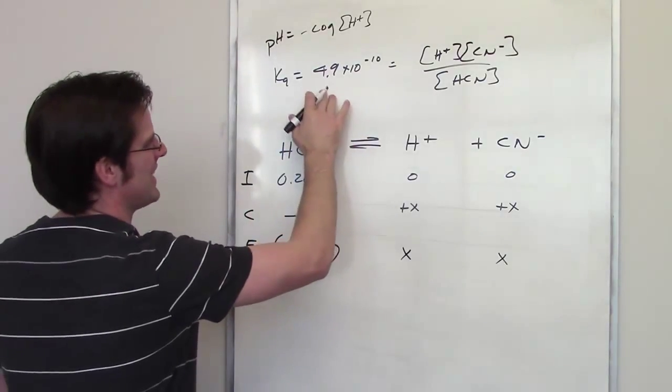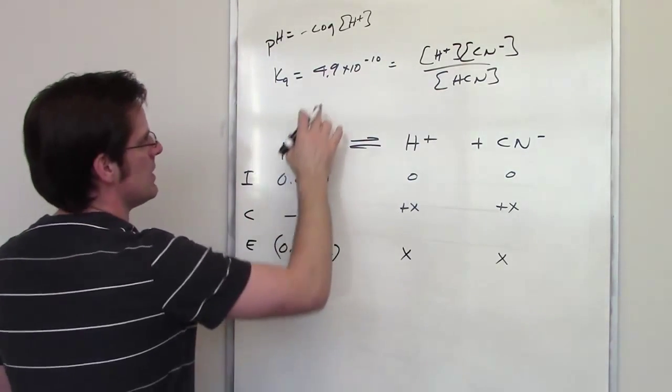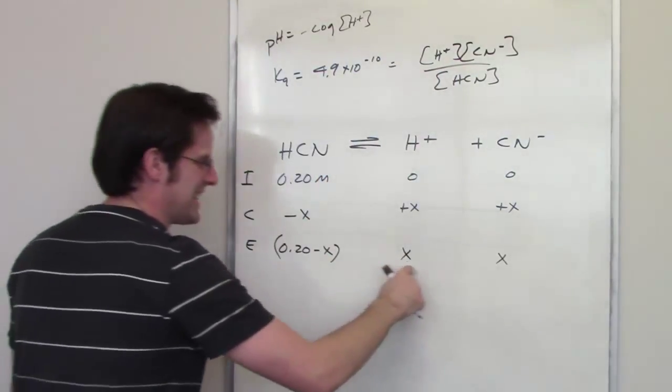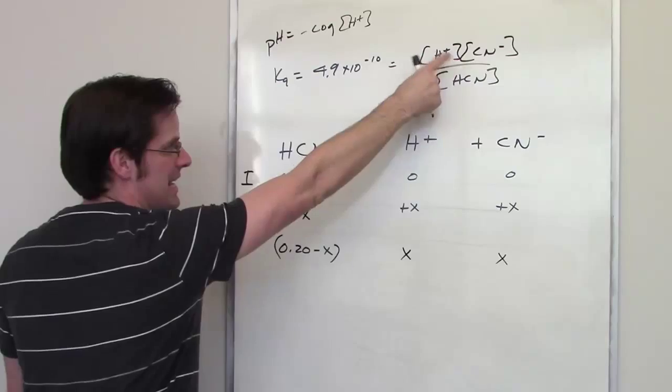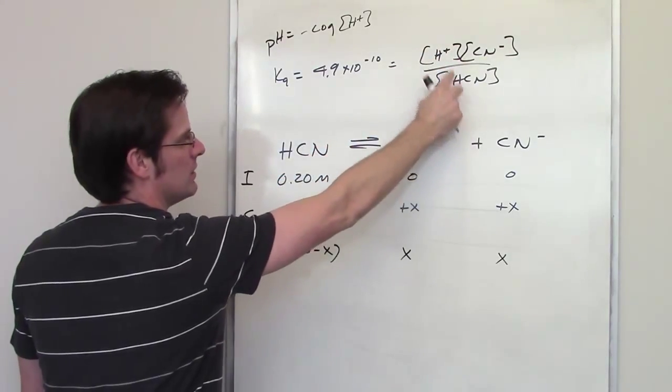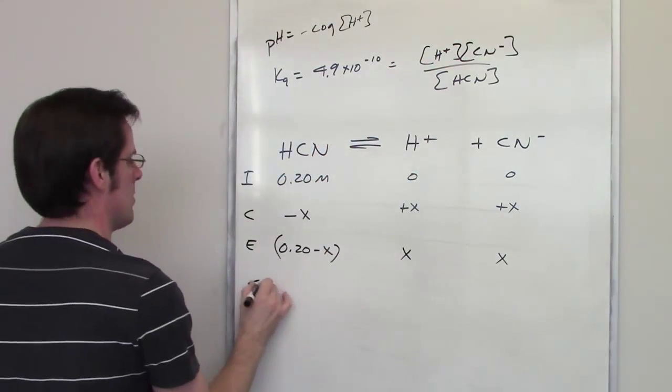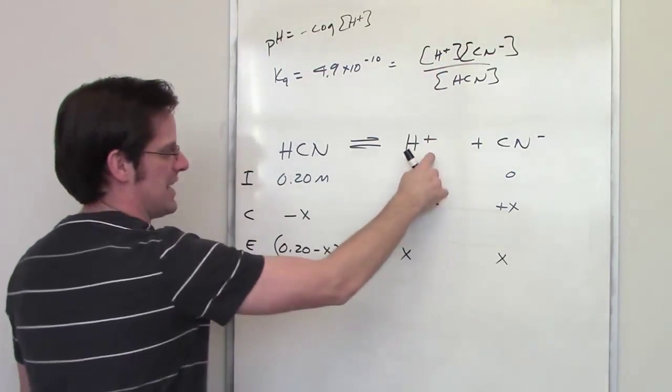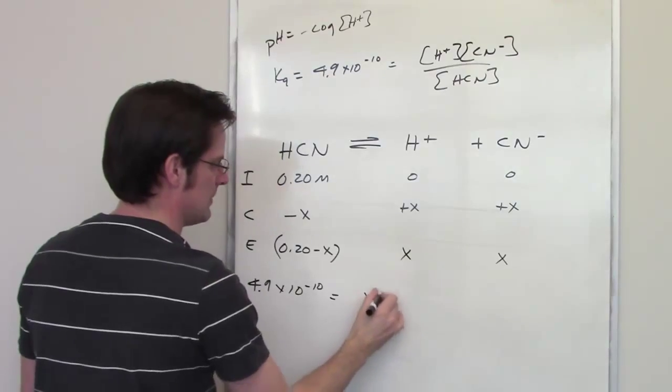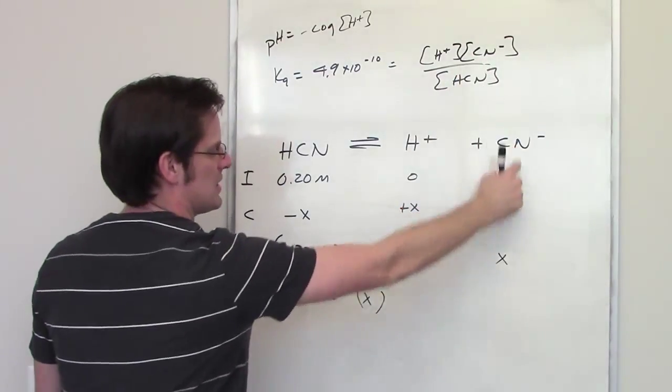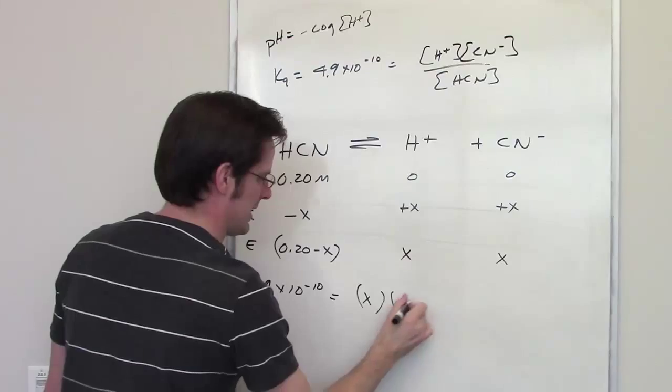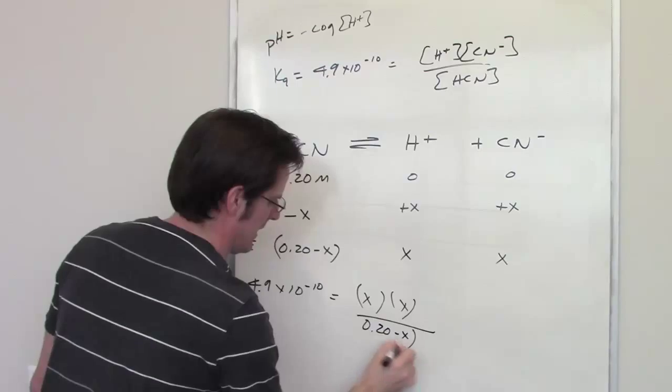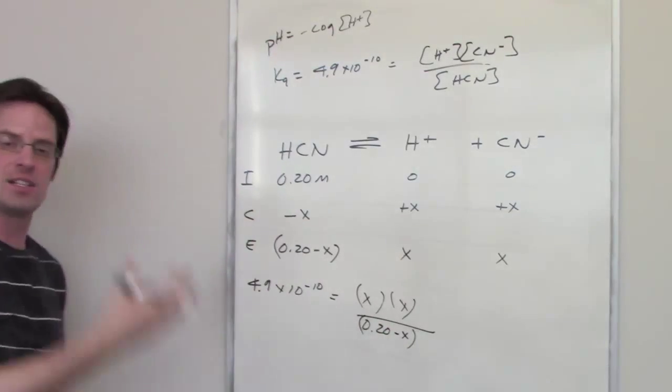So once again, we've got a K-expression up here, 4.9 times 10 negative 9 equaling each of these things. What I'm going to do is I'm going to take these values and throw them in for where they belong here. So I've got 4.9 times 10 to the negative 10 being equal to H+ equilibrium concentration is x, CN- equilibrium concentration is also x, and I divide that by the HCN equilibrium concentration, which is 0.20 minus x. Then I solve for x.